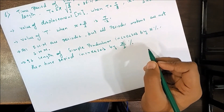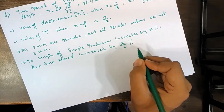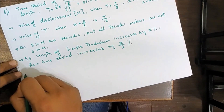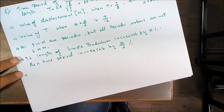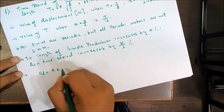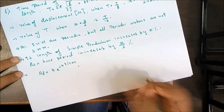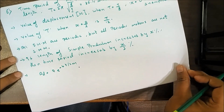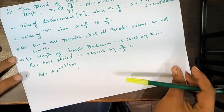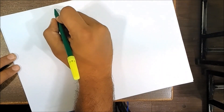Damped oscillation synopsis: the amplitude in damping is given by A = A₀·e^(−bt/2m). Now transitioning to wave mechanics — one of the most important topics in Physics Part 1 for CET.